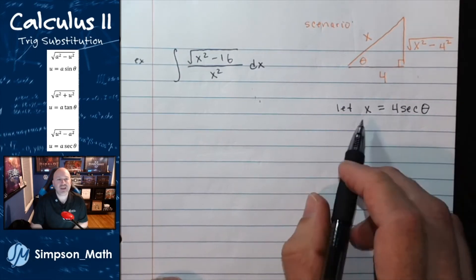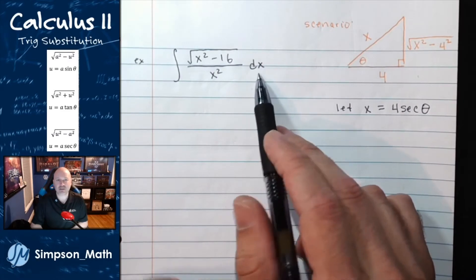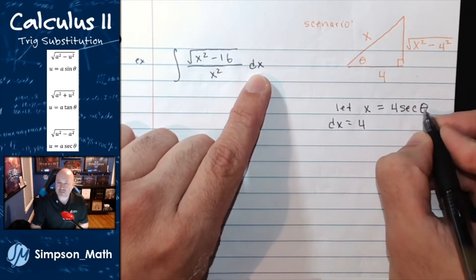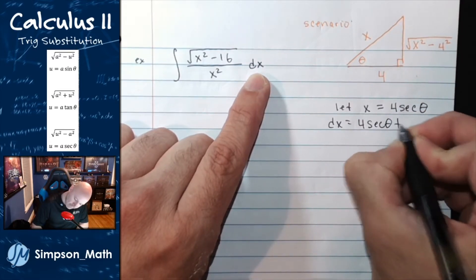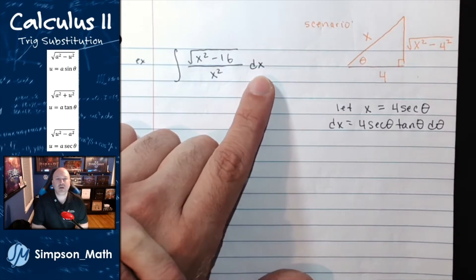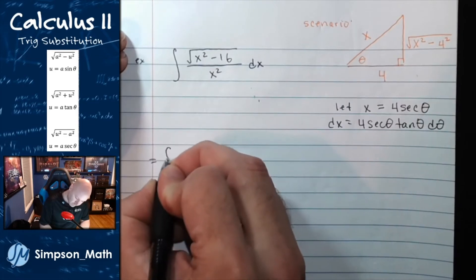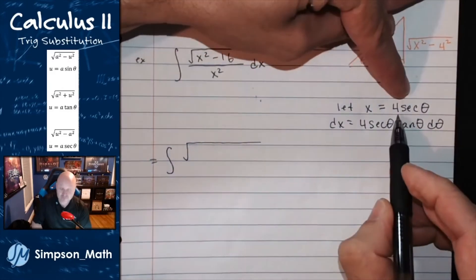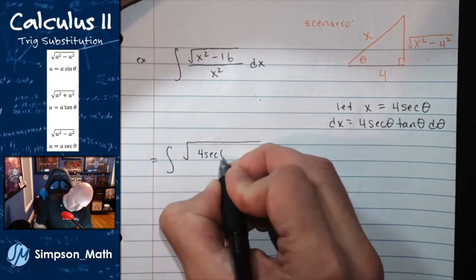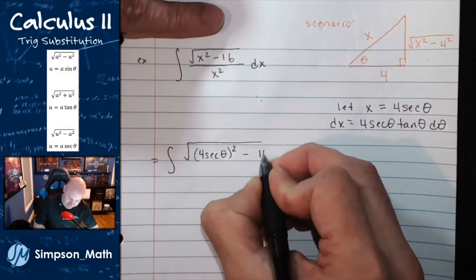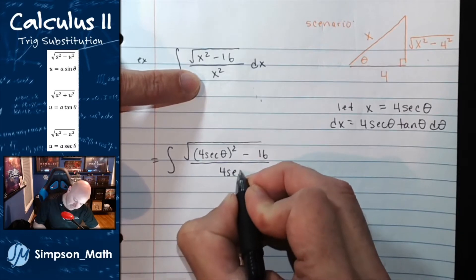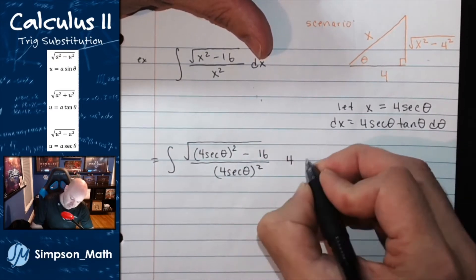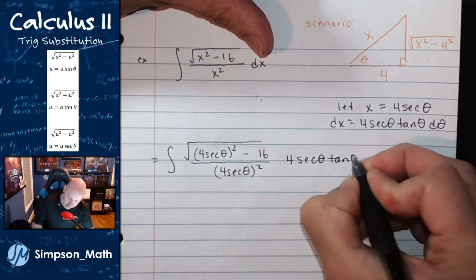That's the trig substitution. Now I need dx: the derivative of x equals 4 secant theta tangent theta d theta. Substituting in: the square root of 4 secant theta squared minus 16, over another 4 secant theta squared, times dx which is 4 secant theta tangent theta d theta. So 4 secant theta squared is 16 secant squared theta.